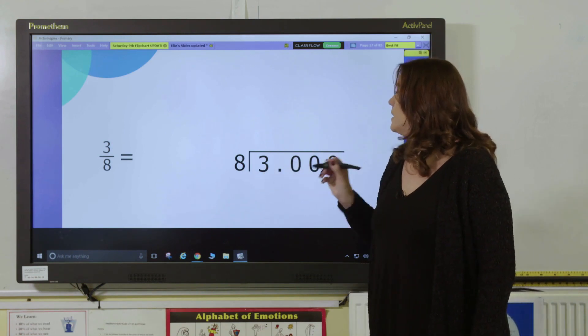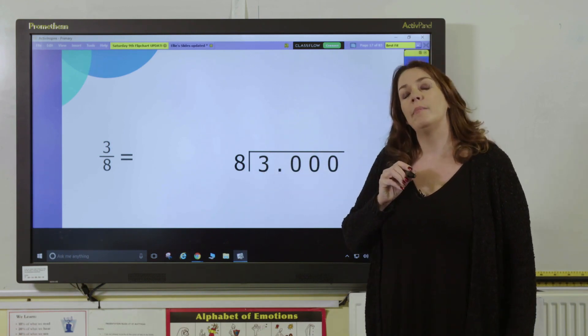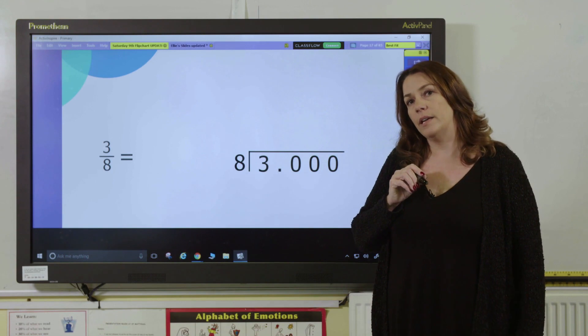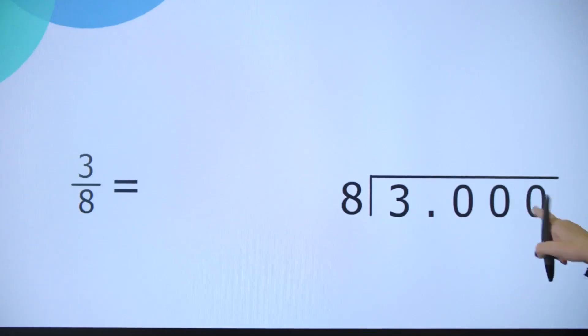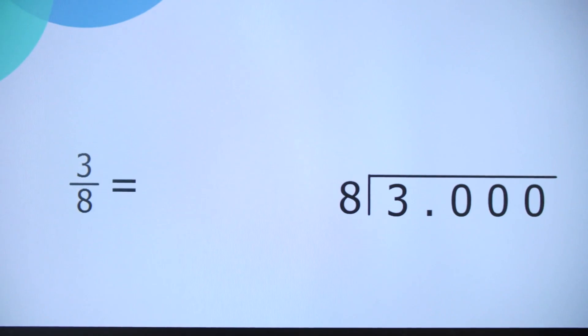I've put my numbers into the bus stop, but because I'm going to get a decimal answer, I need to turn my 3 into a decimal. So I've given it three zeros to help me, and now I can start dividing.